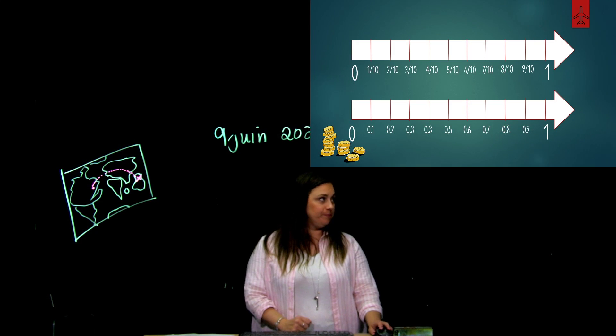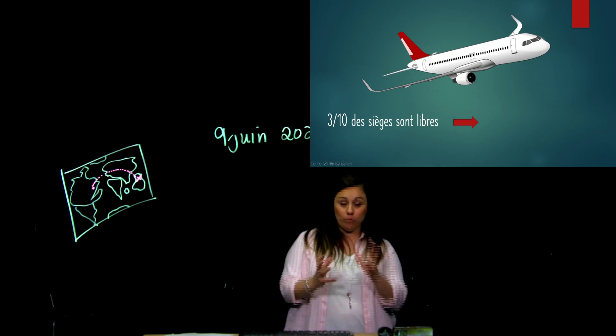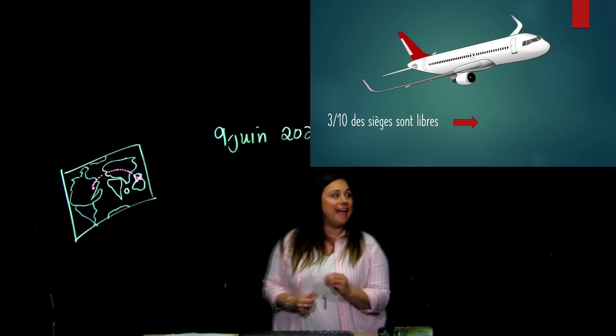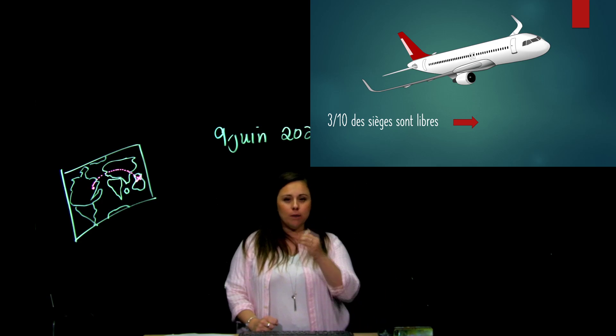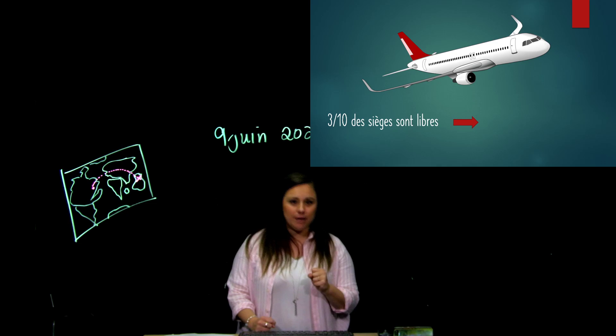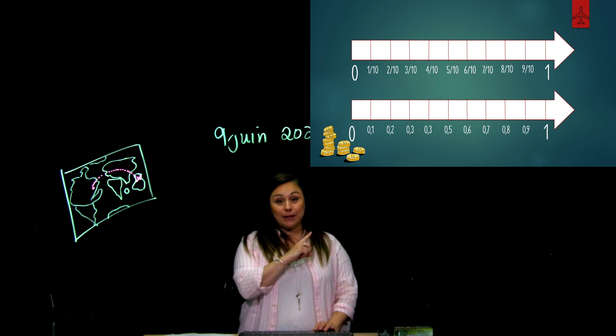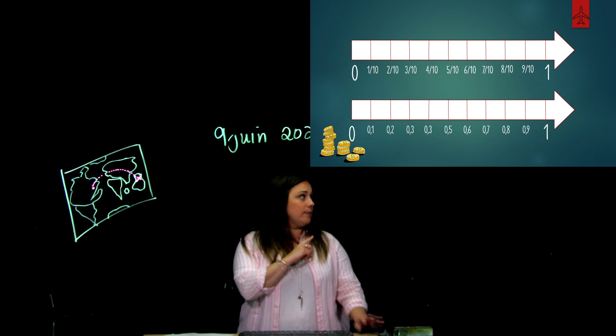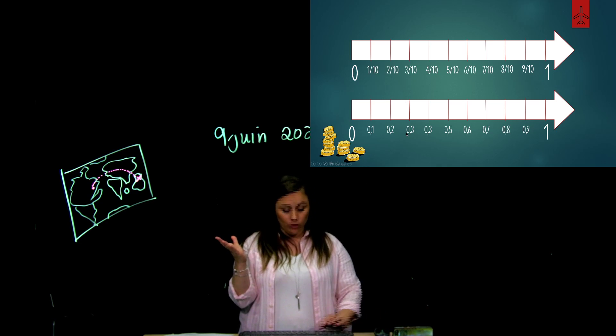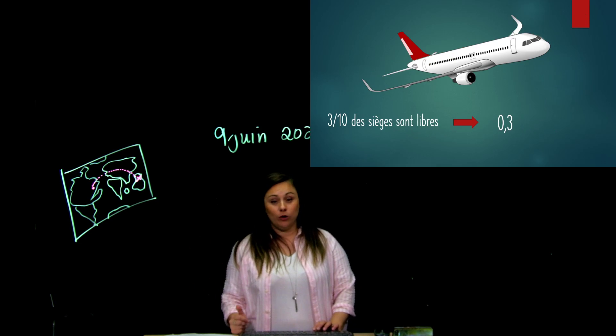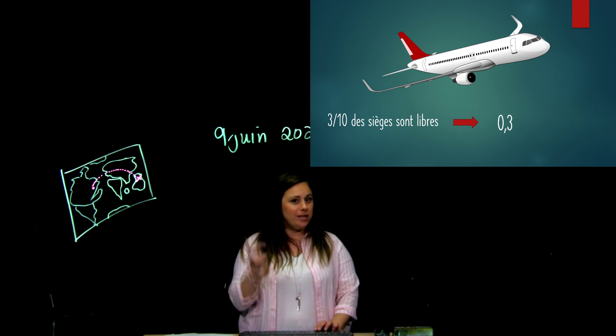Si je te dis, dans un avion, j'ai trois dixièmes des sièges qui sont libres. Je voudrais que tu me mettes ça en nombre décimale. Comment tu m'écrirais trois dixièmes en nombre décimale? En faisant référence ici à ma droite numérique, bien, trois dixièmes, je m'en vais voir ma fraction trois dixièmes, je descends, c'est 0,3. Alors, la réponse 0,3, c'est égal à trois dixièmes.